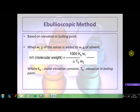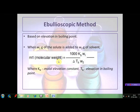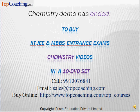The second method for determining the molecular weight of an organic compound is the ebullioscopic method, which is based on the elevation in boiling point. If w₁ grams of the compound is added to w₂ grams of a suitable solvent, and ΔTb is the elevation in boiling point observed, then the molecular weight M₁ is equal to 1000 × Kb × w₁ divided by ΔTb × w₂, where Kb is the molar elevation constant.